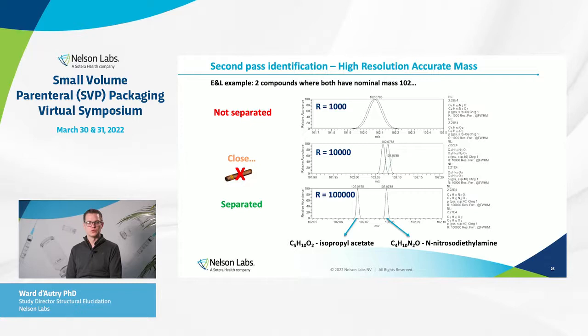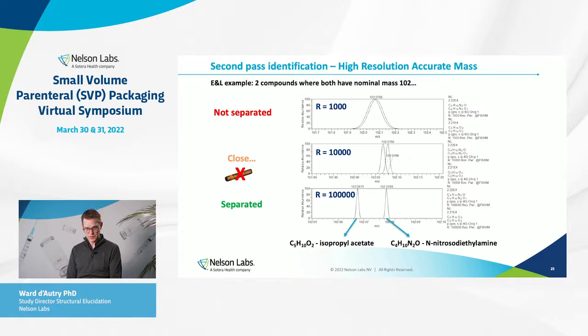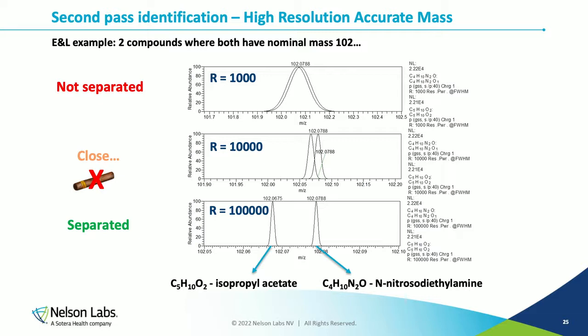A real extractable and leachable example: two compounds both have a nominal mass of 102. At resolution 1,000 the peaks nearly overlap; at 10,000 separation begins; only at 100,000 are the two clearly separated. One compound is isopropyl acetate, which causes little harm, while the other is nitrosamine — nitrosodiethylamine — a highly toxically potent compound. Accurate identification is critical.